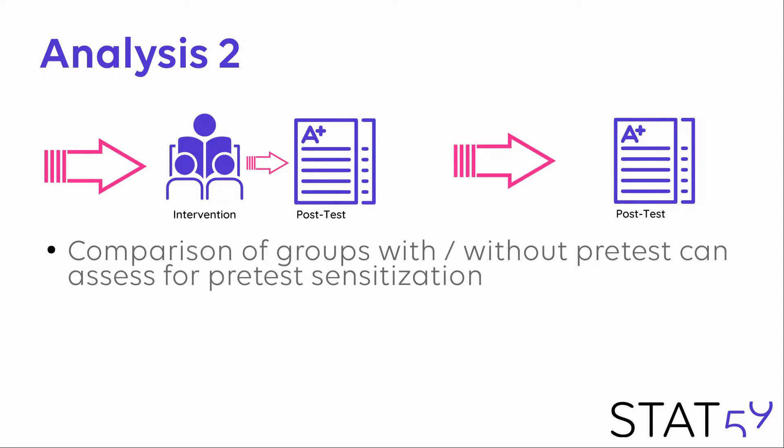In the second part of the analysis, we can compare the groups with and without the pre-test and assess for pre-test sensitization. Pre-test sensitization means that simply by giving your students a pre-test, you are biasing the results in the rest of the study. Most of us intuitively feel that giving students a pre-test hints at what the post-test is likely to cover. So even if we make completely different pre- and post-tests, we inject some biases. And here in the Solomon 4 group design, we can actually tease out what those biases were.